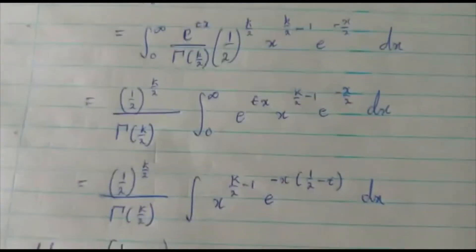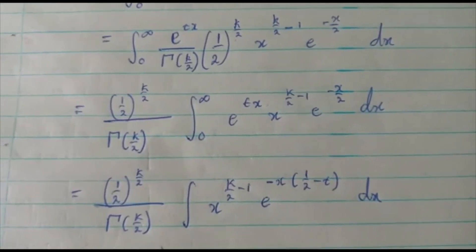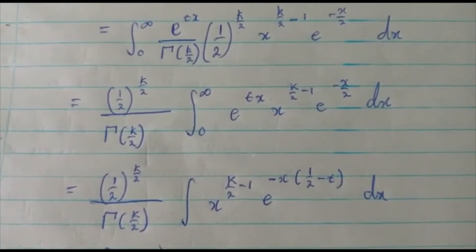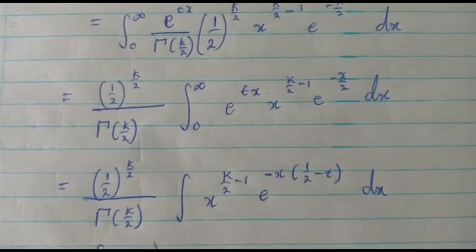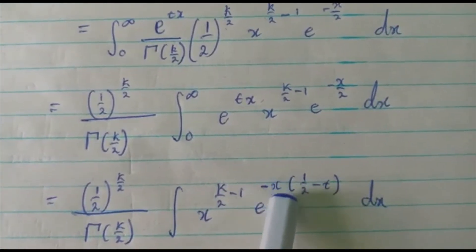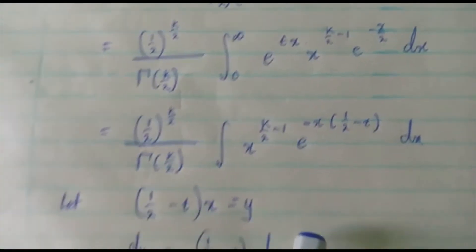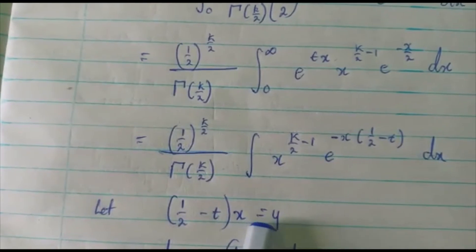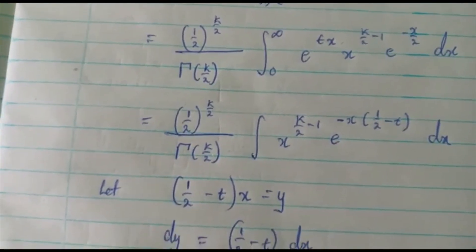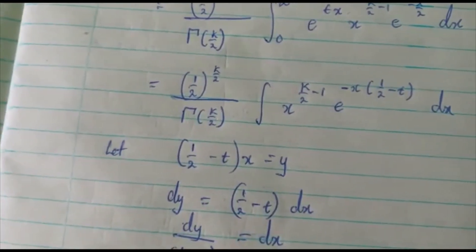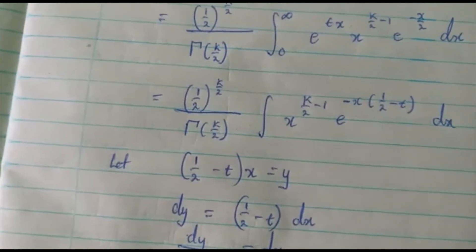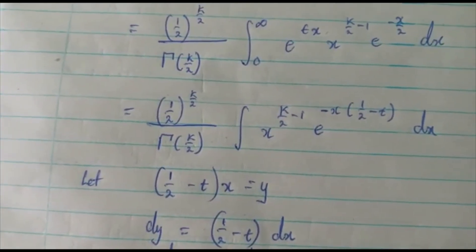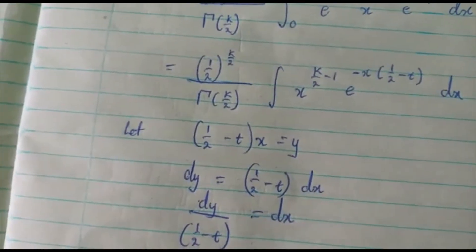From here we are going to perform a substitution. We let the whole power of e — that is, (half minus t) times x — equal to y. We differentiate: dy is equal to (half minus t) dx.